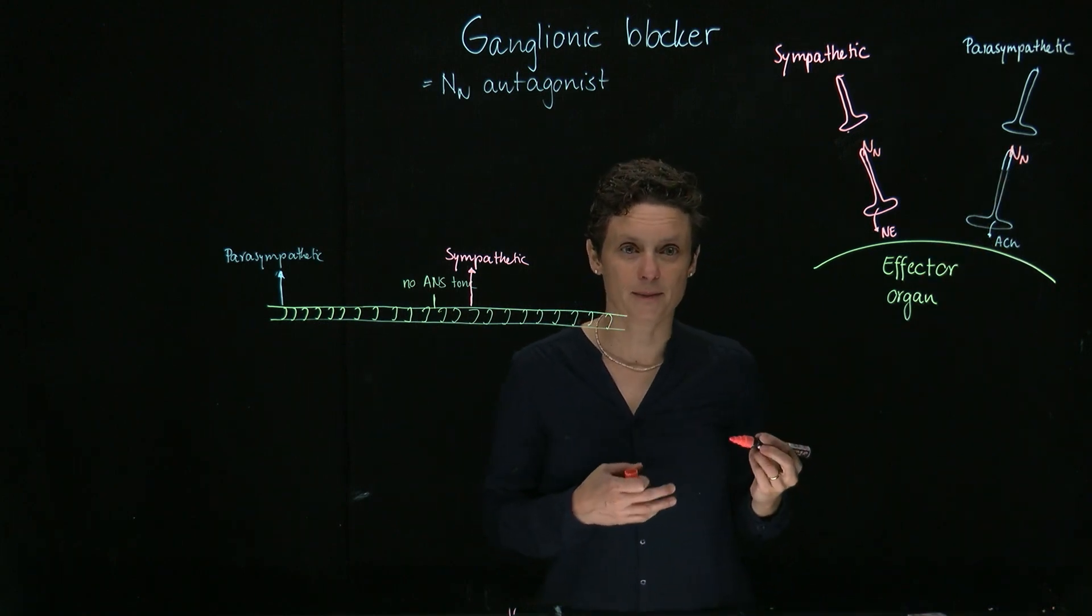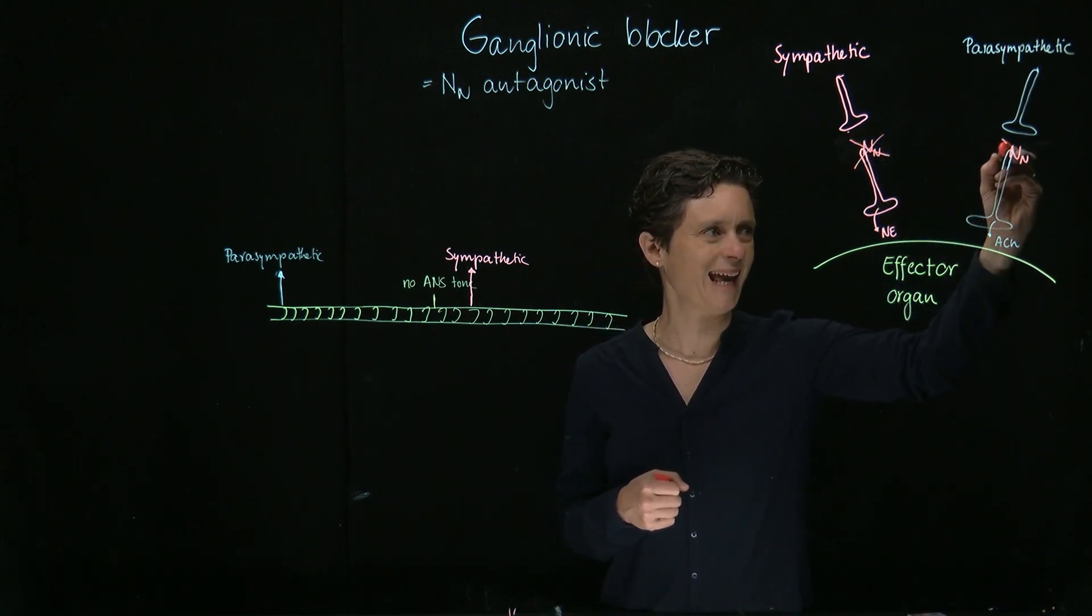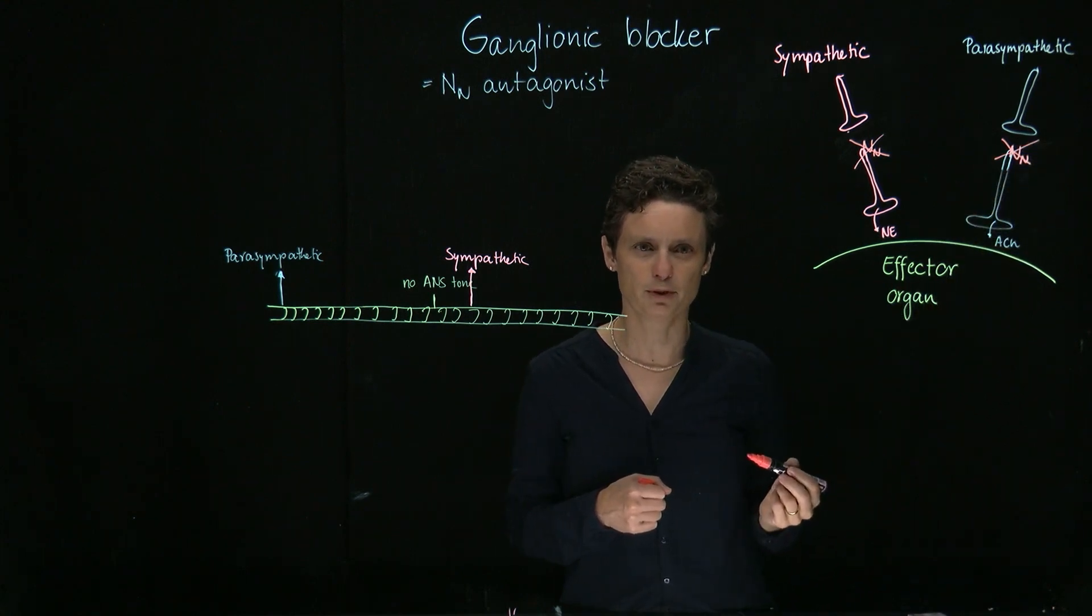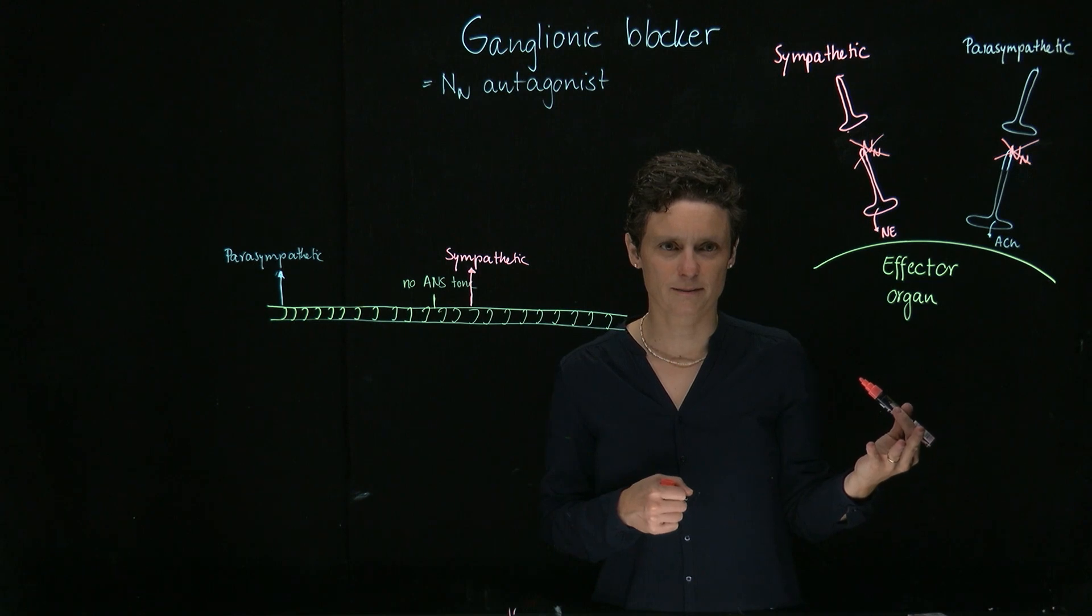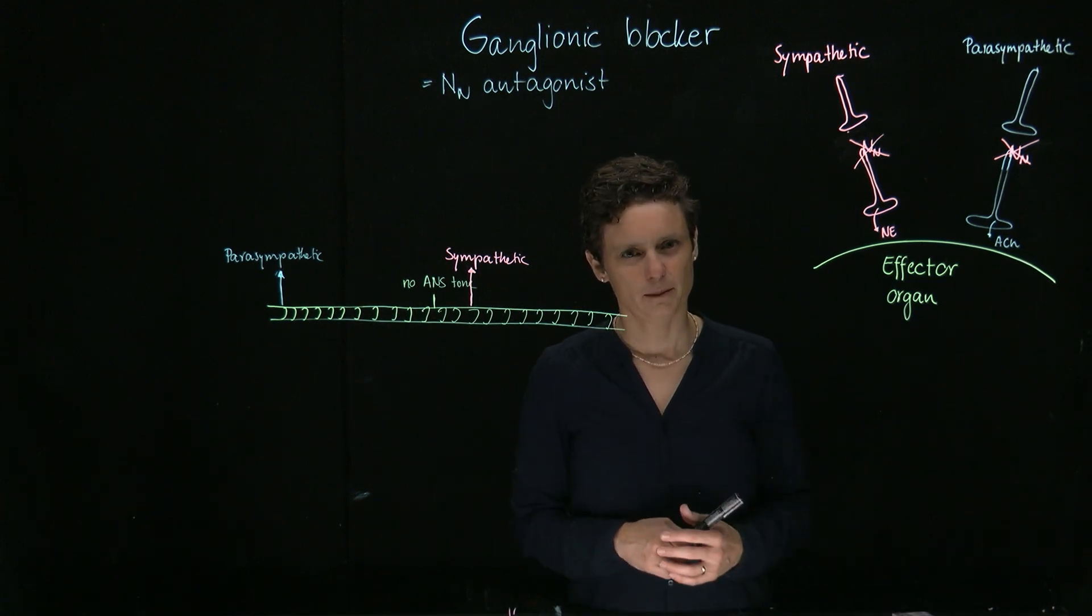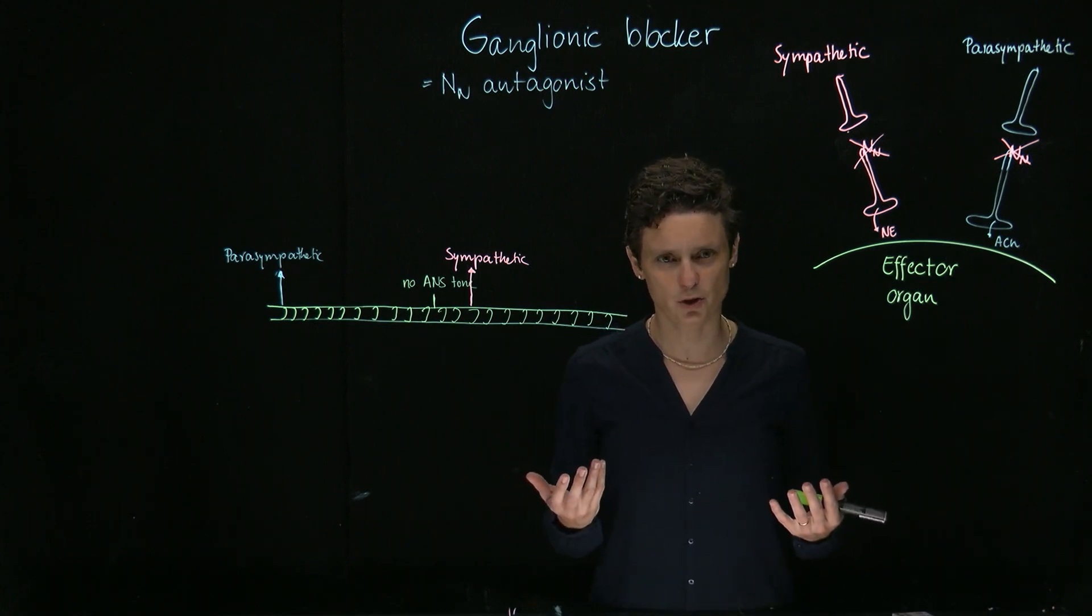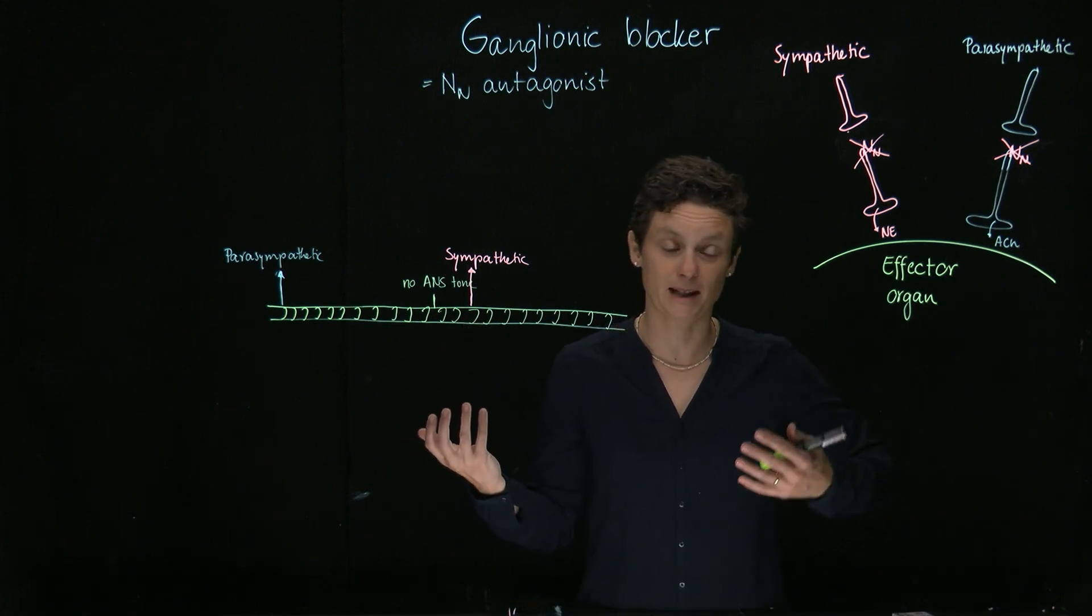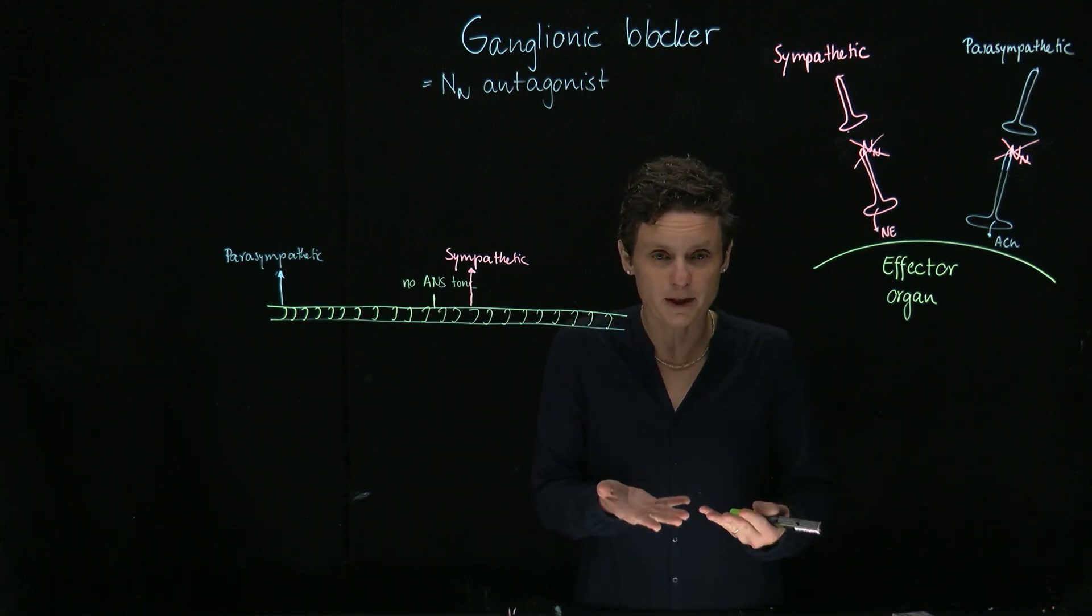With a ganglionic blocker, we basically block the sympathetic and parasympathetic input onto the specific effector organ. That's what we describe as autonomic tone, because most of our effector organs are under dual control. That means the parasympathetic and sympathetic are fighting for their input. They both give input.